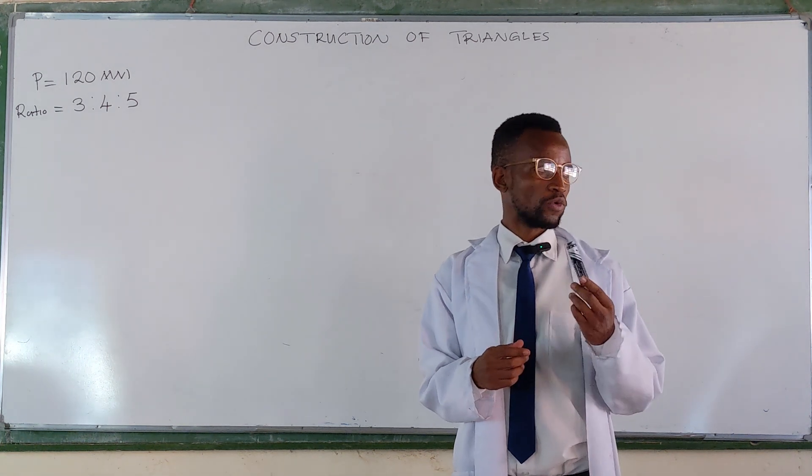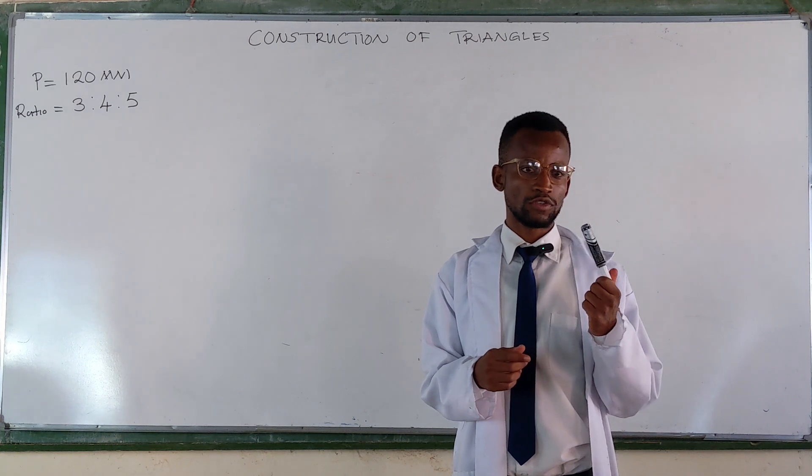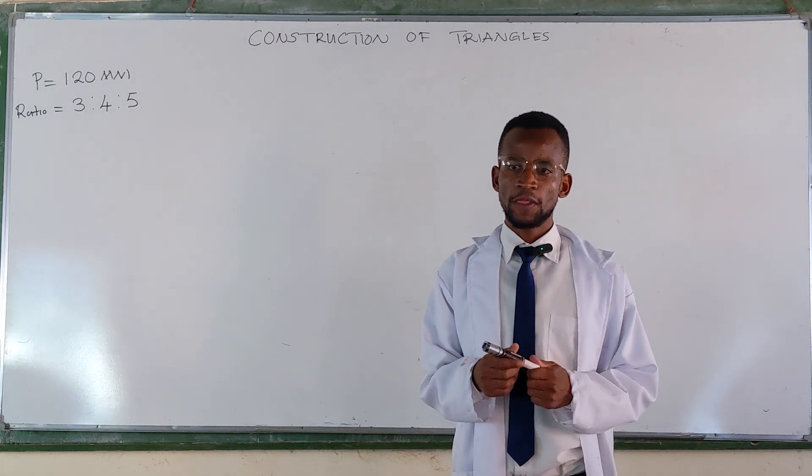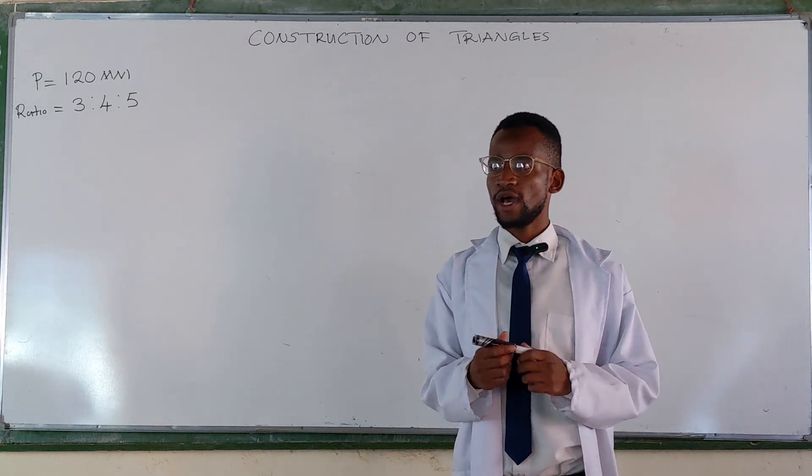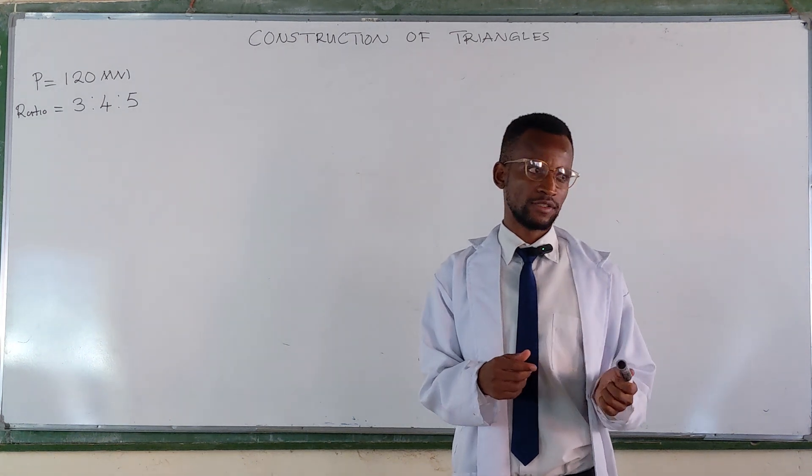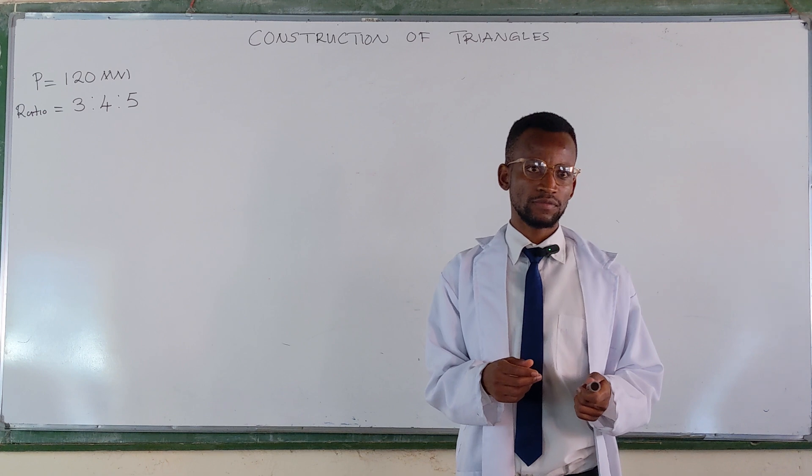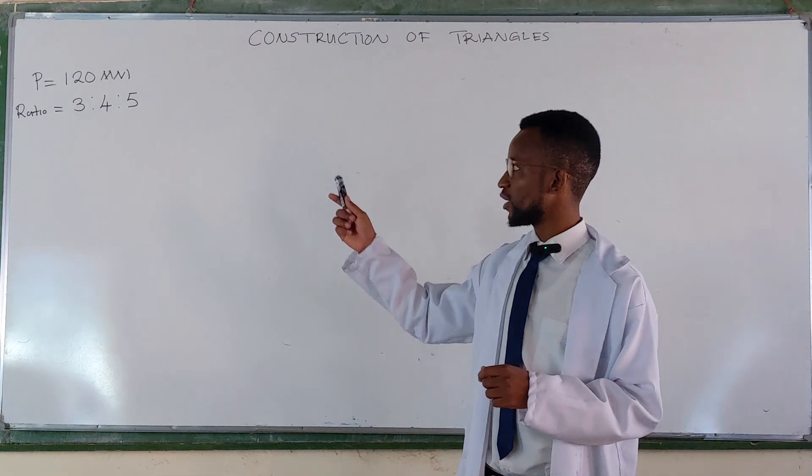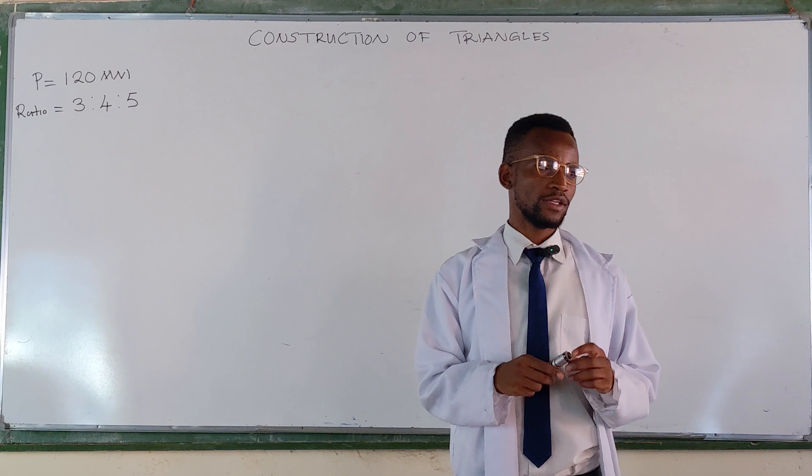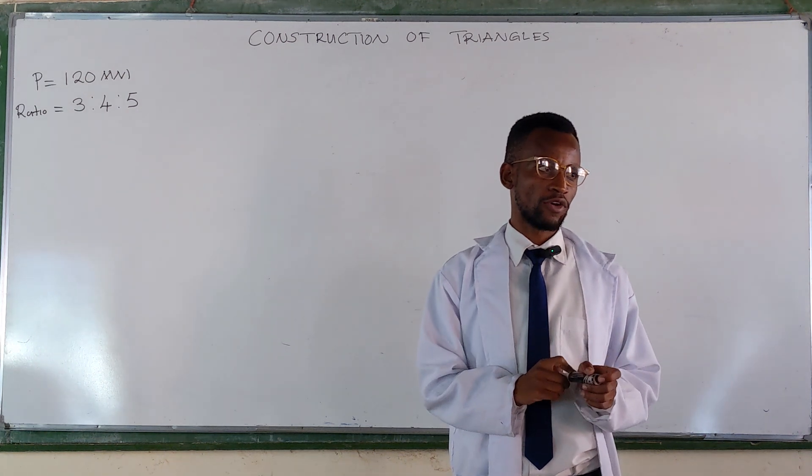Here, we want to construct a triangle whose perimeter has been given, and the ratio of sides. We know that a triangle has got 3 sides, and the ratio that has been given there is the ratio of the 3 sides of a triangle.